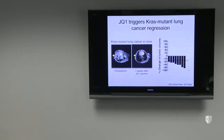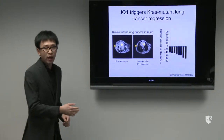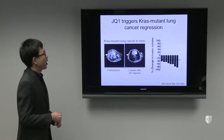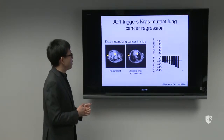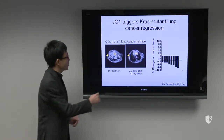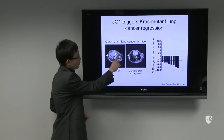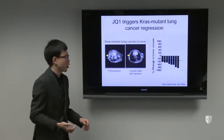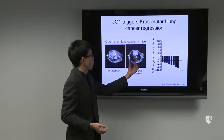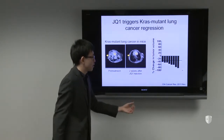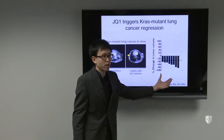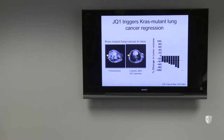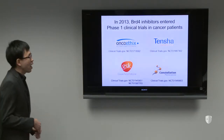I want to show one example from this list: in lung cancer with a KRAS mutation driving cancer progression. As a pre-treatment, you see the lung cancer here. After a single injection of JQ1 for two weeks, you see regression of the cancer. The statistics show that almost every cancer in this mouse model has a pretty good response.